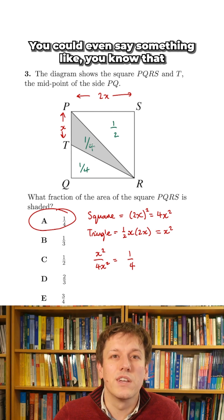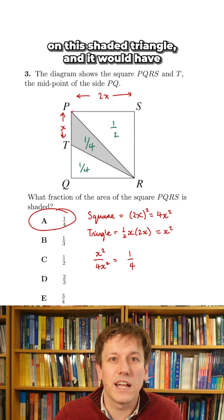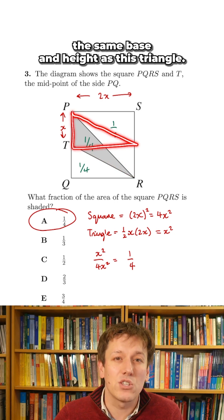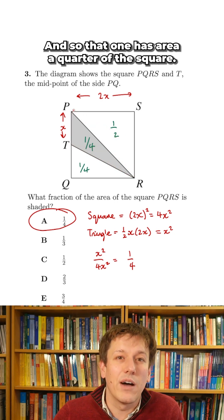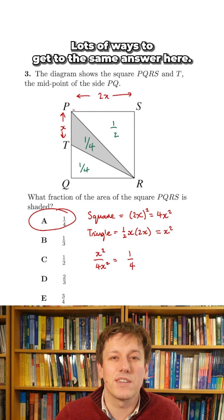You could even say that the formula half base times height would work on this shaded triangle, and it would have the same base and height as this triangle, and so that one has area a quarter of the square, and so the shaded one must have area a quarter as well. Lots of ways to get to the same answer here.